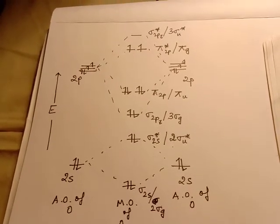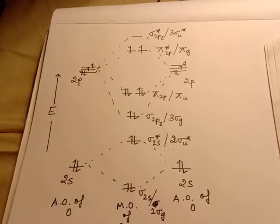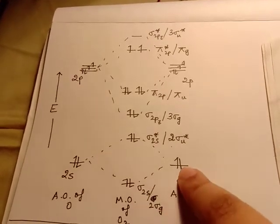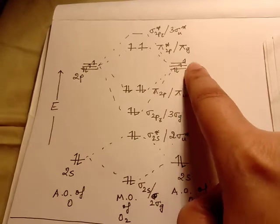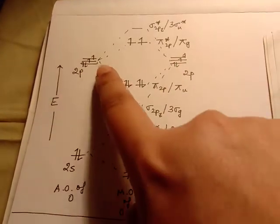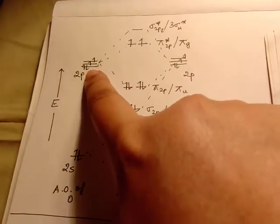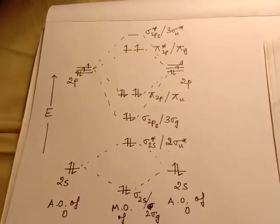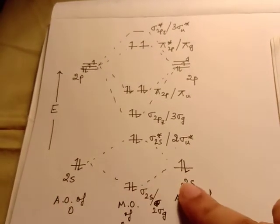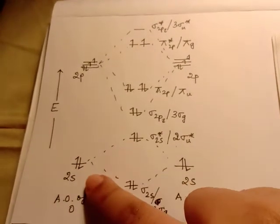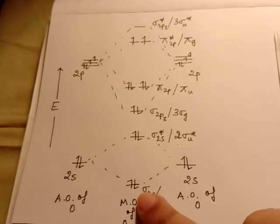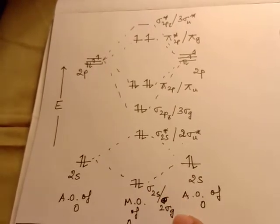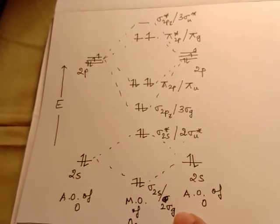So if we have 6 electrons from each oxygen atom — 6 from one and 6 from the other — that gives a total of 12 electrons. These 2S orbitals combine to form one bonding orbital, which can be written as sigma 2S or 2 sigma G. It is called 2 sigma G because the 1S orbitals had also combined to form 2 sigma orbitals called 1 sigma G and 1 sigma U. So these 4 electrons get filled up here.